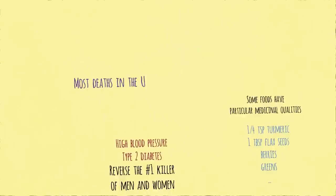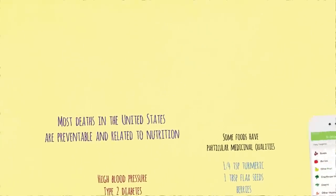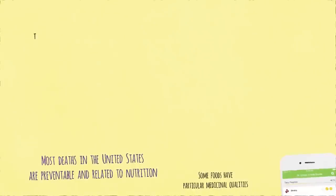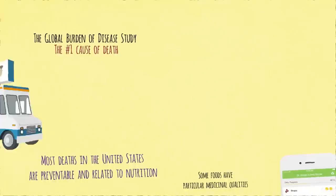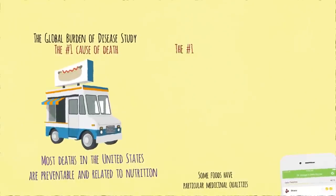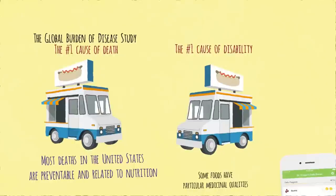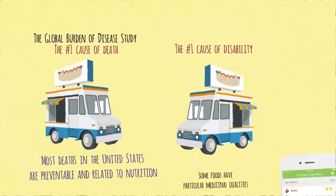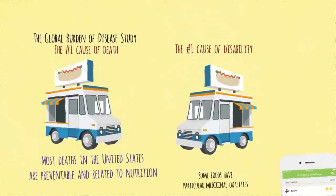Most deaths in the United States are preventable and related to nutrition. According to the most rigorous analysis of risk factors ever published, the Global Burden of Disease Study, funded by the Bill and Melinda Gates Foundation, the number one cause of death in the United States is our diet. The number one cause of disability is our diet, which has now bumped tobacco smoking to number two. Smoking now only kills about a half million Americans every year, whereas our diet kills hundreds of thousands more.